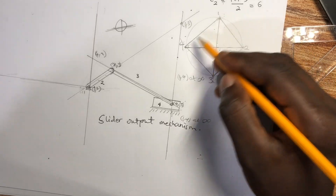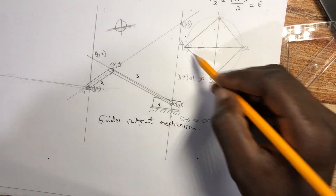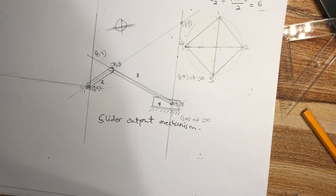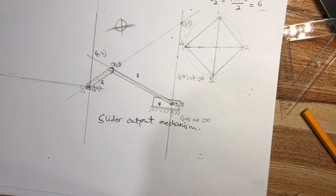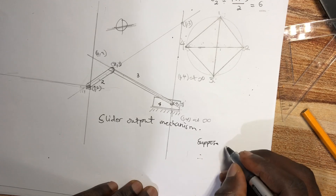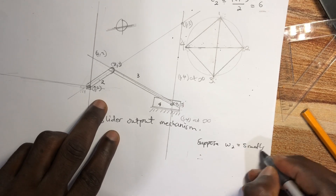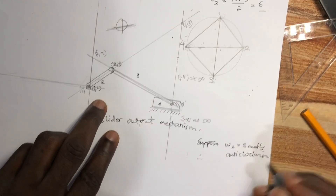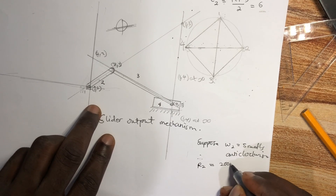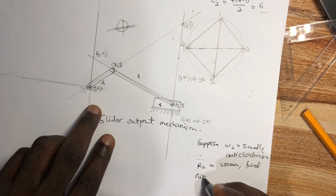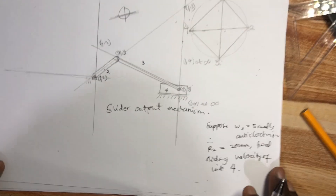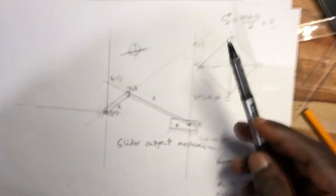Now every link is connected to each other, so we have identified all six instant centers. Suppose ω₂ = 5 rad/s anticlockwise and the radius of link 2 is 200 mm. Find the sliding velocity of link 4.